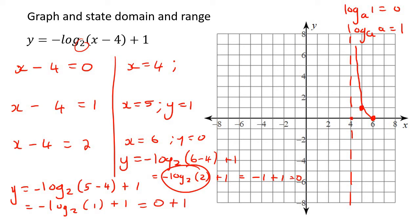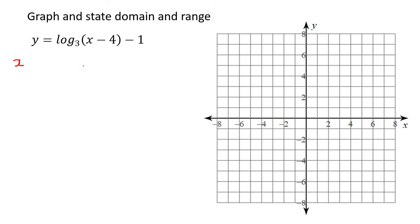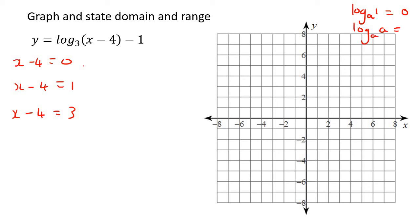This one's going to go upwards. For the domain, it will always be from the asymptote — which is 4 — to infinity. The range for a logarithmic graph will always be negative infinity to positive infinity. Remember the properties: log_a(1) equals 0, and log_a(a) equals 1.